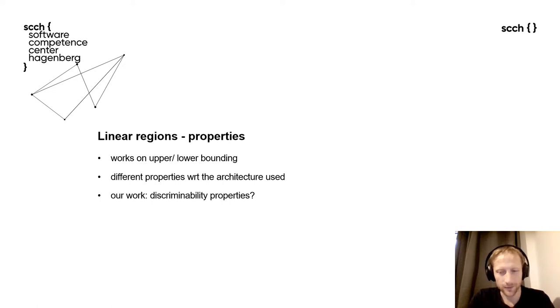There were quite interesting research directions focused on linear regions recently. For example, there was a number of works focusing on upper and lower bounding the number of linear regions for a neural network. From other directions, some groups investigating the structure of linear regions resulting during a training process of a neural network.